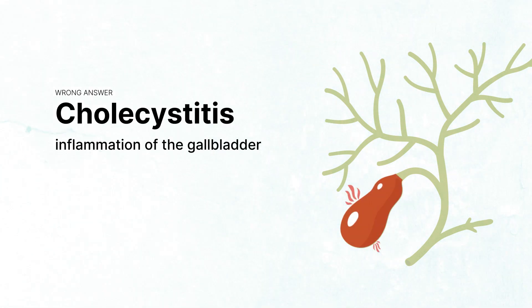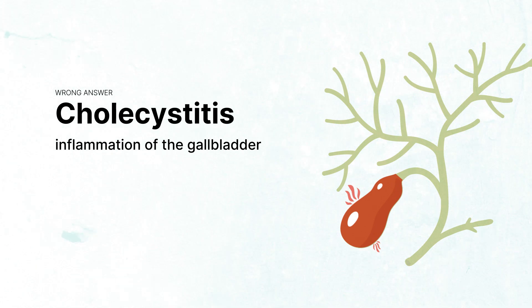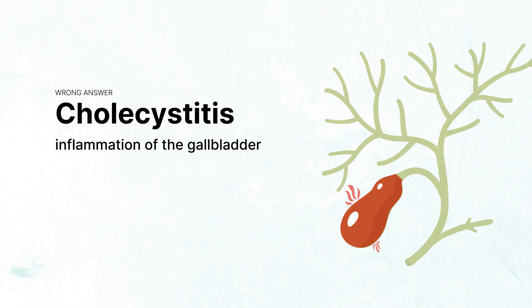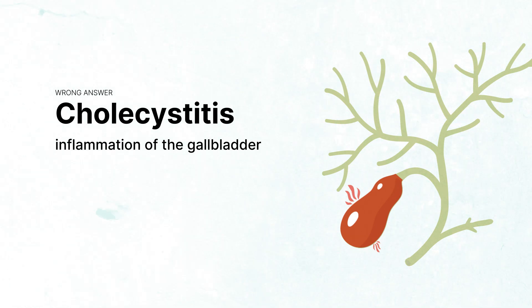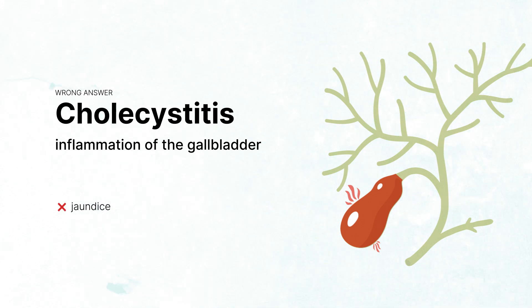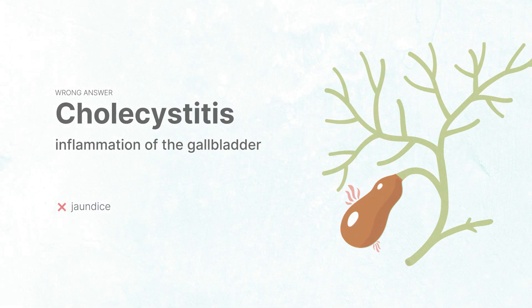Cholecystitis is inflammation of the gallbladder, typically secondary to obstruction by a gallstone. Right upper quadrant pain and fever may be present as in cholangitis, but jaundice does not typically occur in cases of cholecystitis.